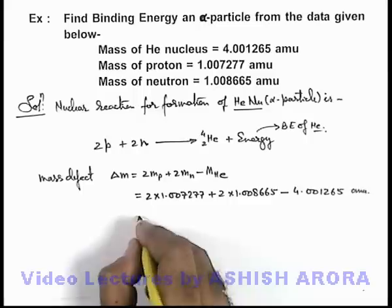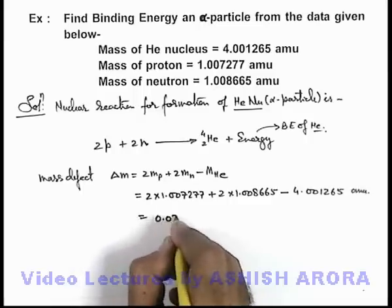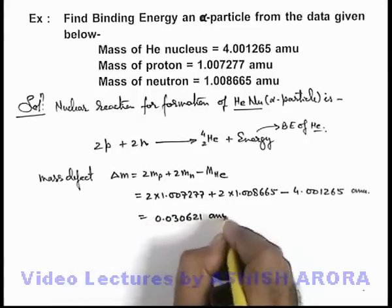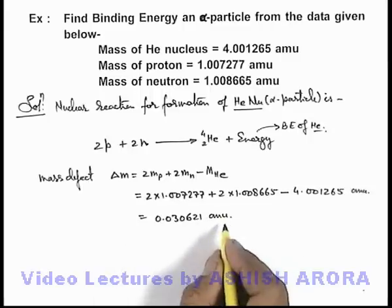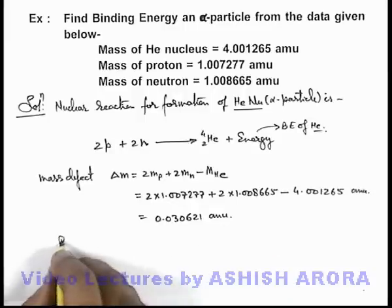In amu, and on simplifying this we get 0.030621 amu. This is the mass defect in atomic mass units we get, so directly we can write.